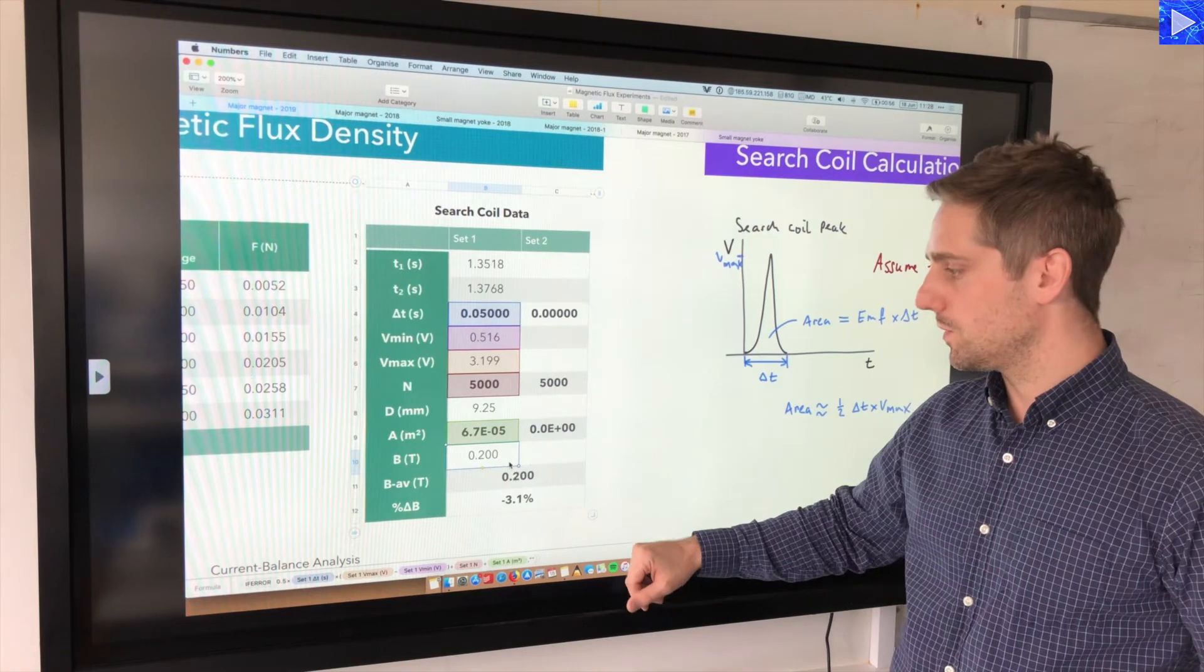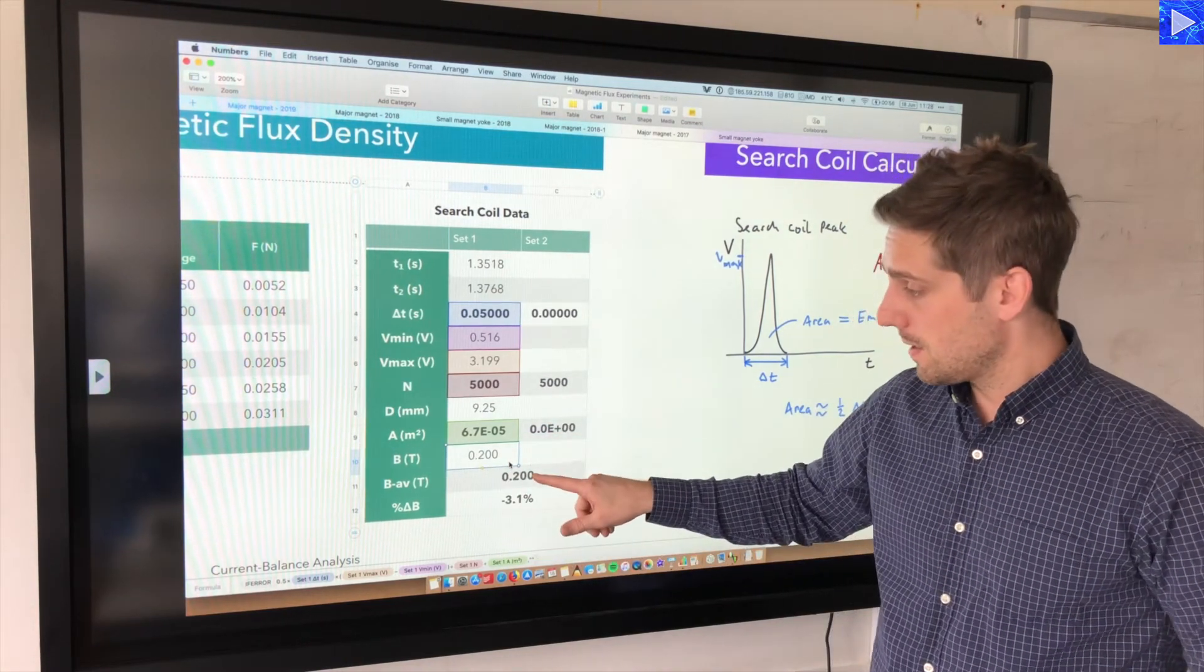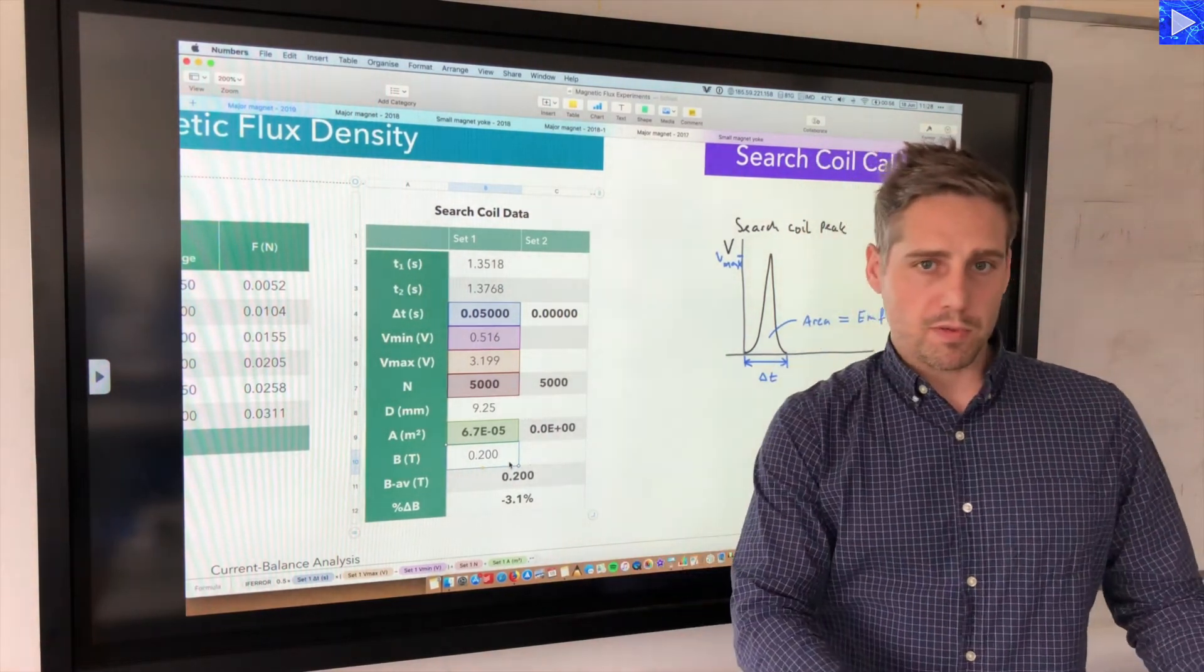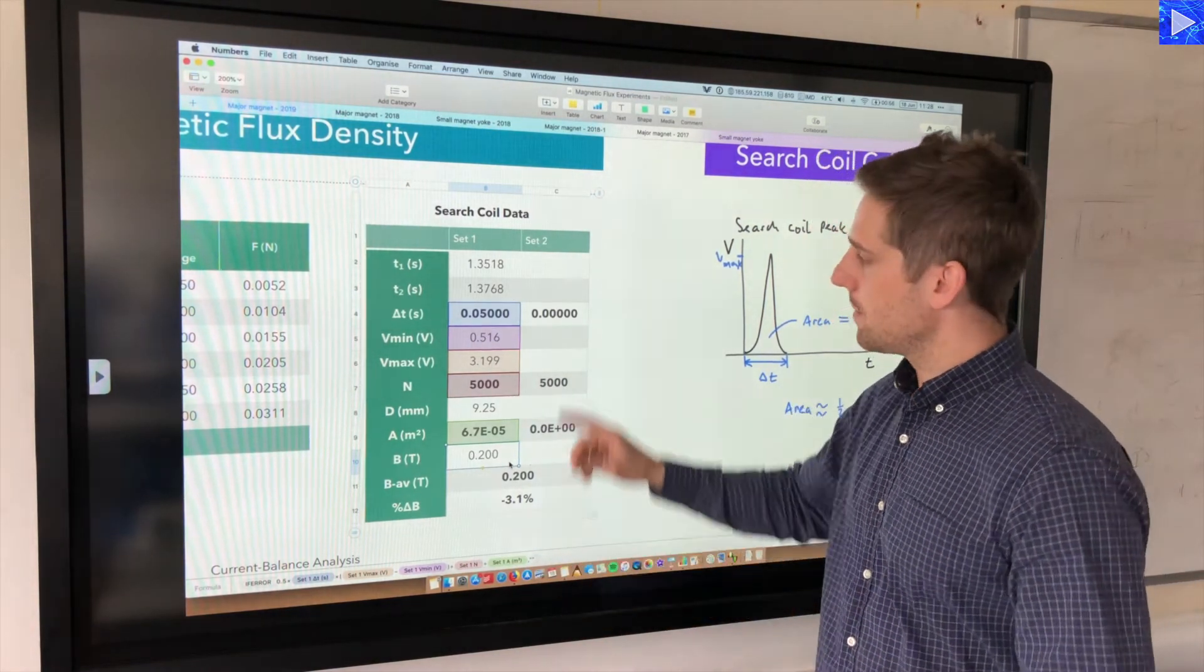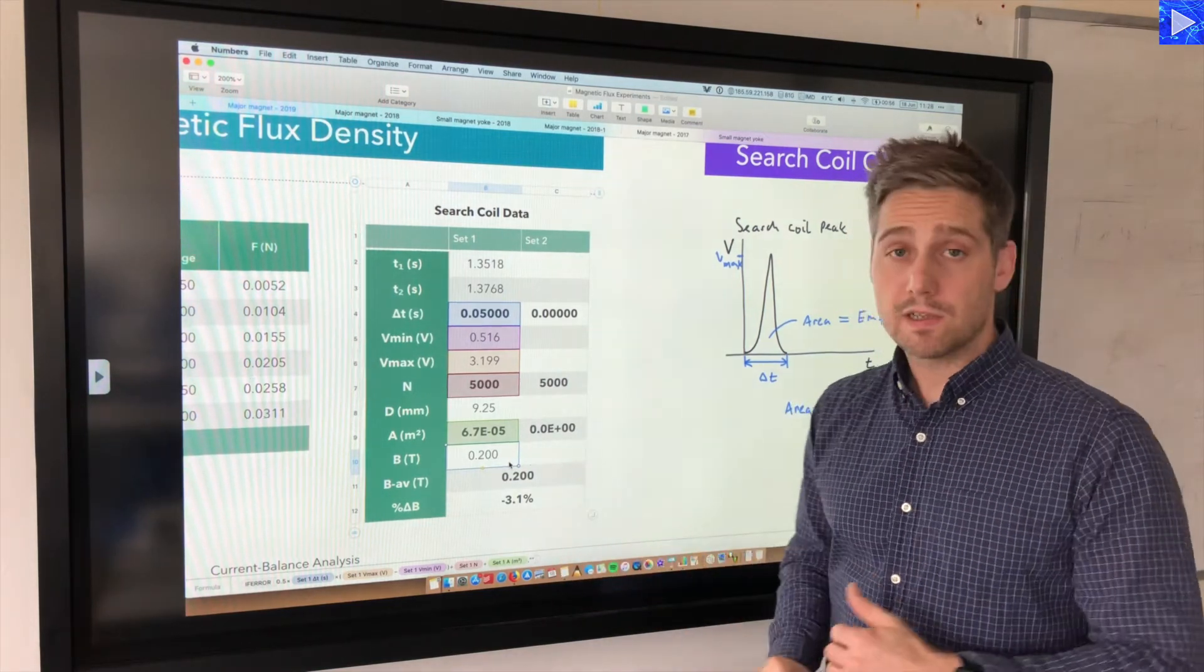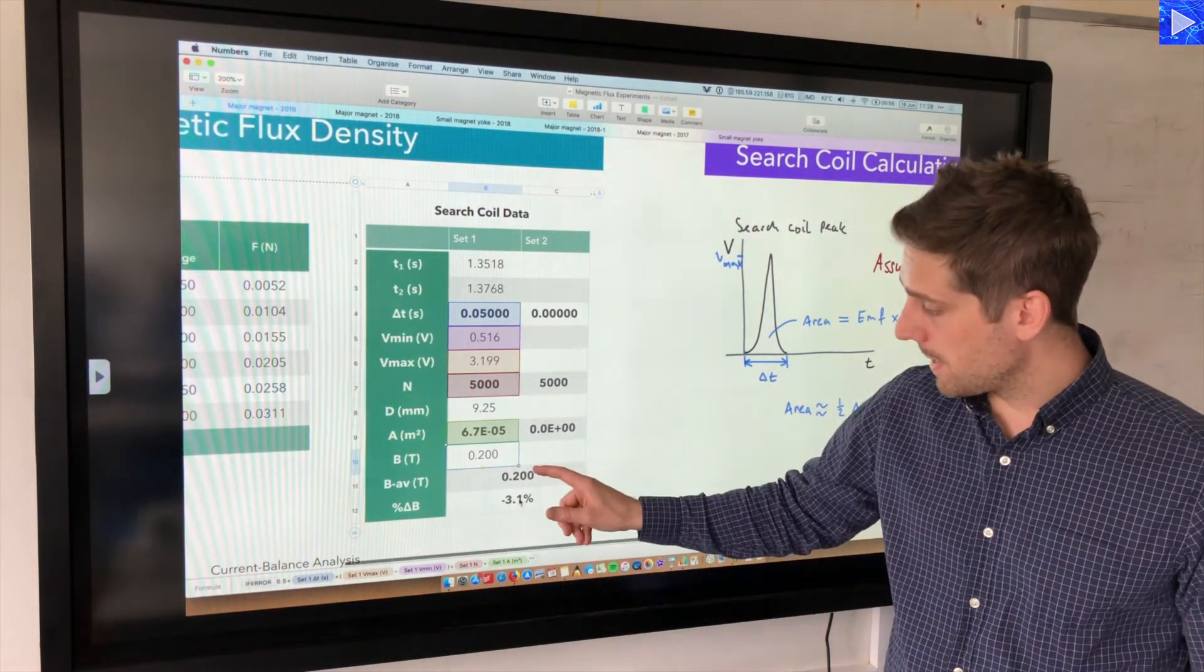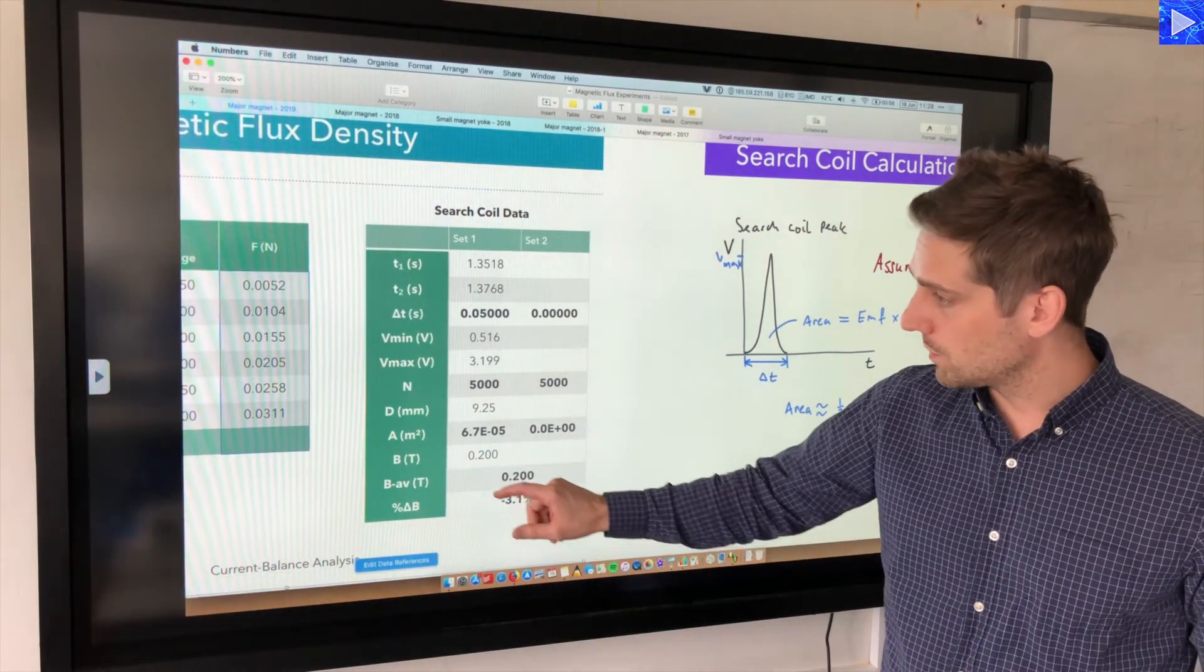And there we go. So what we've got here, the value of the magnetic flux density, 0.200, so that's 200 milliteslas. This is working out the average. Obviously you'd want to repeat and average. You can put the search coil in again, get another peak, analyze that peak. You can put that data in there. I haven't done that on this occasion, but you could do that to get an average. This works out the average automatically.